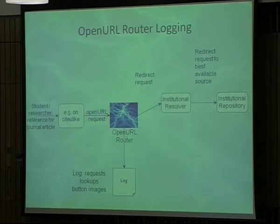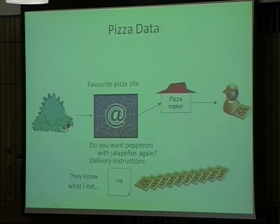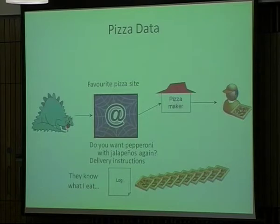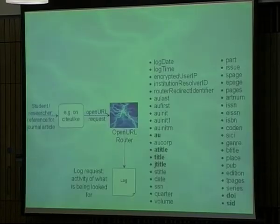The router also logs lookup requests and button images and keeps them over time. Every time I want a pizza, they know I want pepperoni with jalapenos again, back to my house — so they have a log of me having the same pizza many times. When I go back they say, do you want the same pizza again to the same house as soon as possible? Yes please. Makes it faster for me, nice and easy. I get tasty pizza delivered to my door faster.